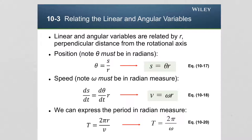An important consideration: for all particles in the volume of a rigid body, all particles rotate with the same angular velocity, because all of them must turn through the same angle theta during rotation. However, depending on the distance from the axis of rotation r, different particles can have different linear velocities. The angular velocities are the same for all particles, but the linear velocities differ based on distance from the axis.